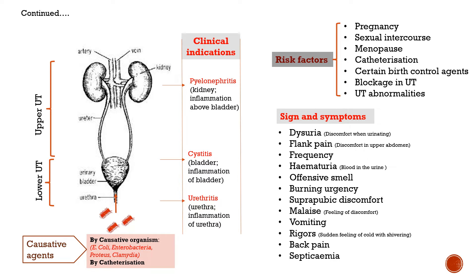Further signs and symptoms include suprapubic discomfort, malaise — meaning a general feeling of discomfort — vomiting, rigors (which is a sudden feeling of cold with shivering), back pain, and septicemia. Septicemia is one of the most notable features of this infection.